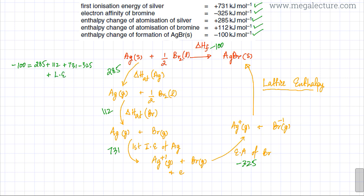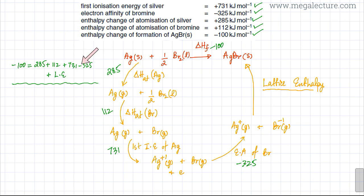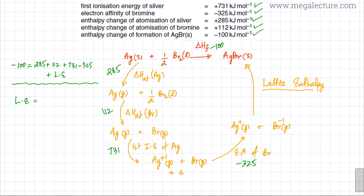Now I'm going to solve this for lattice enthalpy by making LE the subject of the equation. Remember to do this calculation very carefully and always double check, because many students get the negative and positive signs wrong and end up with an incorrect value. Working this out on the calculator, the answer is minus 903 kilojoules per mole.